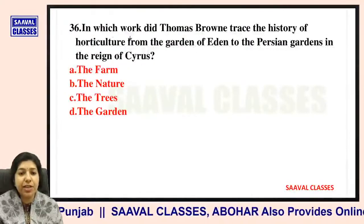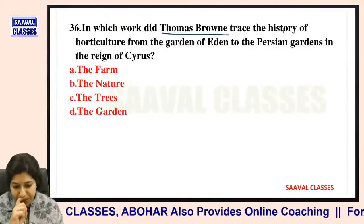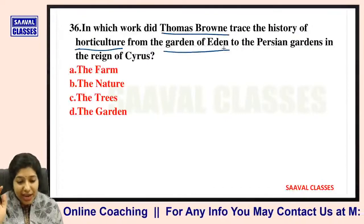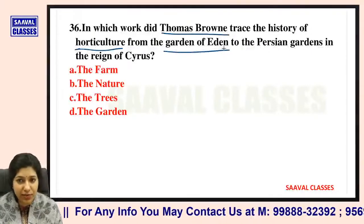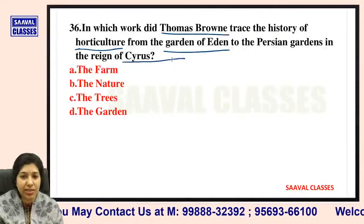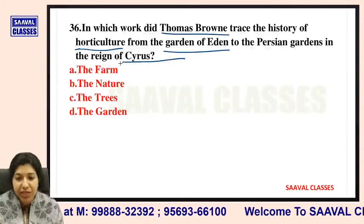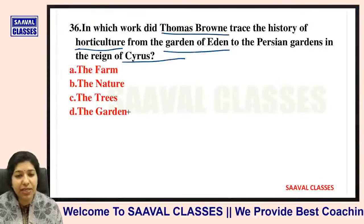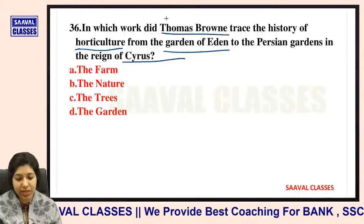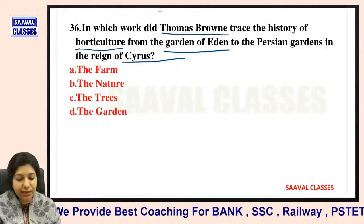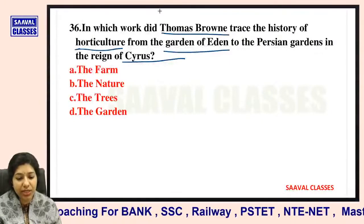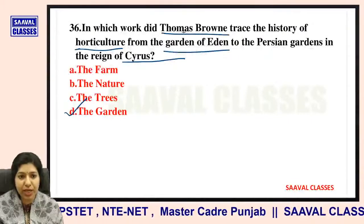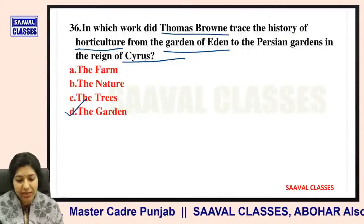Question number thirty-six: In which work did Thomas Brown trace the history of horticulture from the Garden of Eden — Adam and Eve ke time pe — to the Persian gardens in the reign of Cyrus? Is it The Farm, The Nature, The Trees, or The Garden? The answer is The Garden — in The Garden, Thomas Brown traces the history of horticulture.